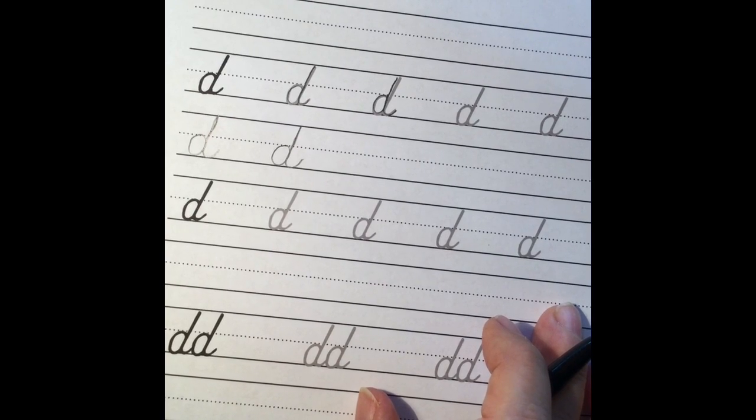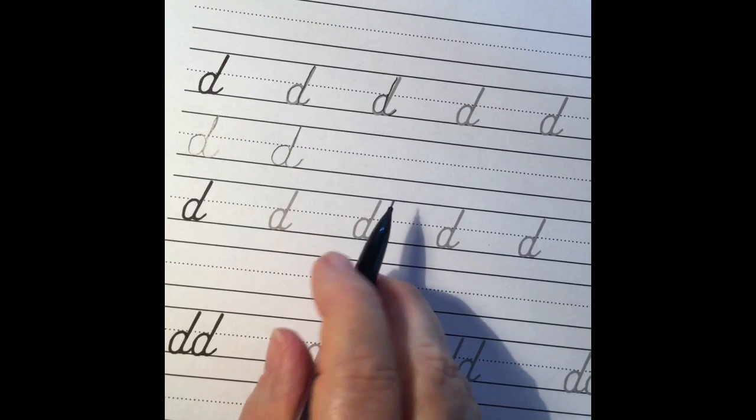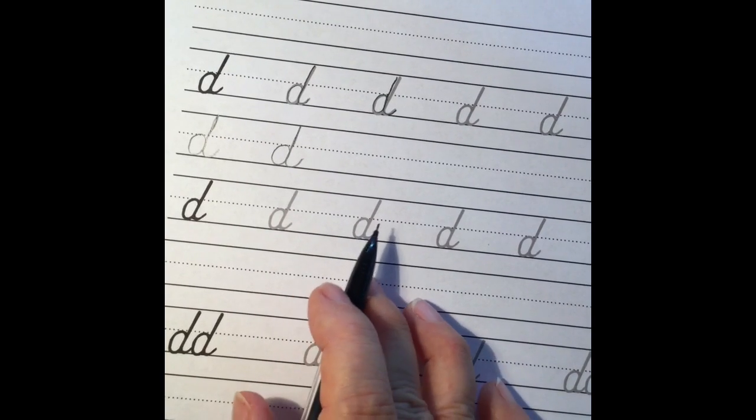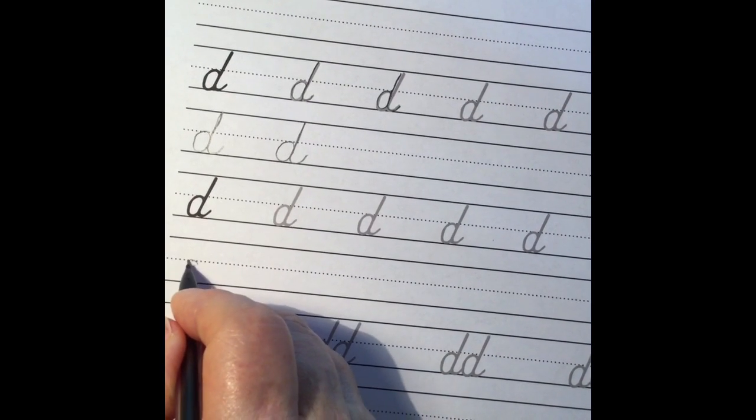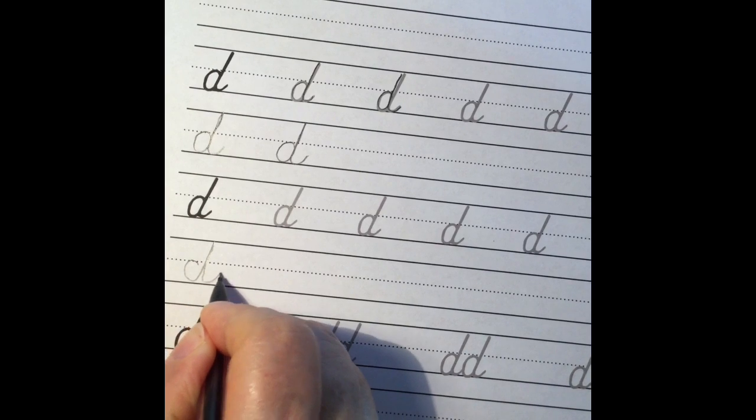Make sure you're keeping that tail of the D nice and straight all the way up to the top. Make sure you don't put a loop in your letter anywhere. Make sure it closes at the top and doesn't look open because then it can start looking like a C and a T.